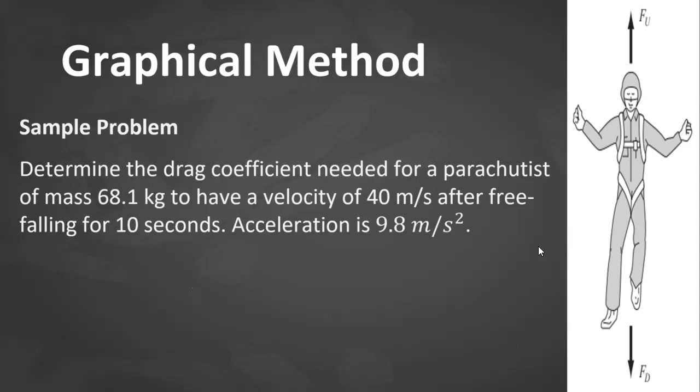There are particularly three methods for solving. First would be the graphical method. So, let's try this problem. Determine the drag coefficient needed for a parachutist of mass 68.1 kilograms to have a velocity of 40 meters per second after free-falling for 10 seconds. Acceleration due to gravity is 9.8 meters per second squared.